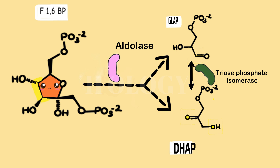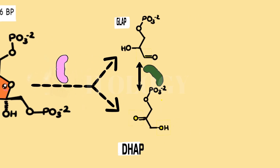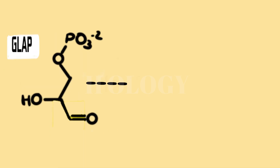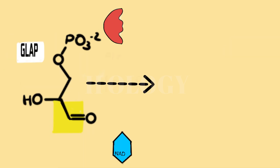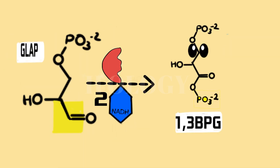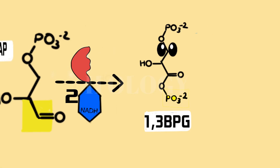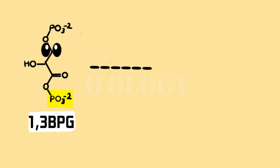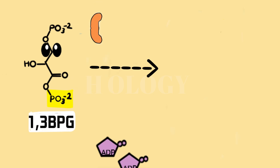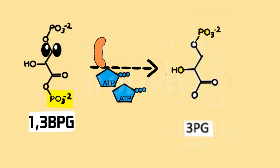Step 6: Glyceraldehyde-3-phosphate is oxidized by the enzyme glyceraldehyde-3-phosphate dehydrogenase, producing NADH and 1,3-bisphosphoglycerate. Step 7: 1,3-bisphosphoglycerate donates its phosphate group to ADP, forming ATP. This reaction is catalyzed by the enzyme phosphoglycerate kinase.